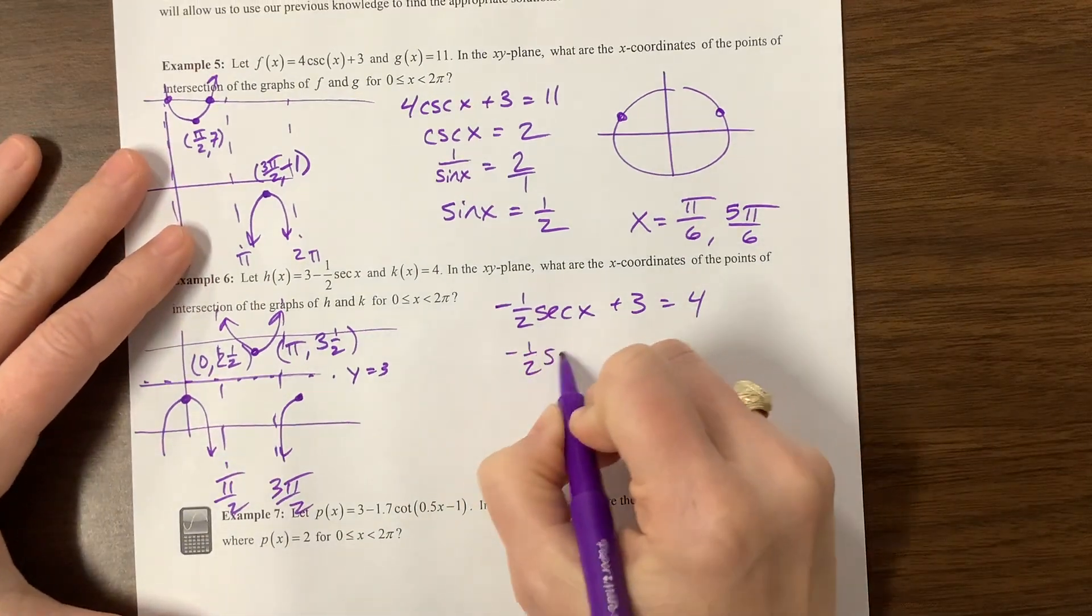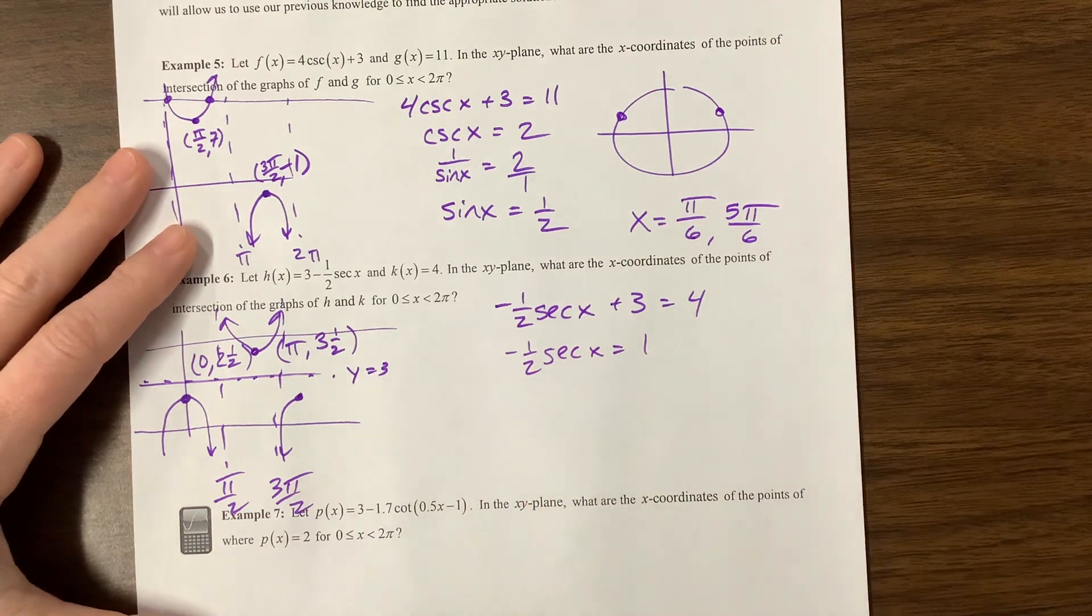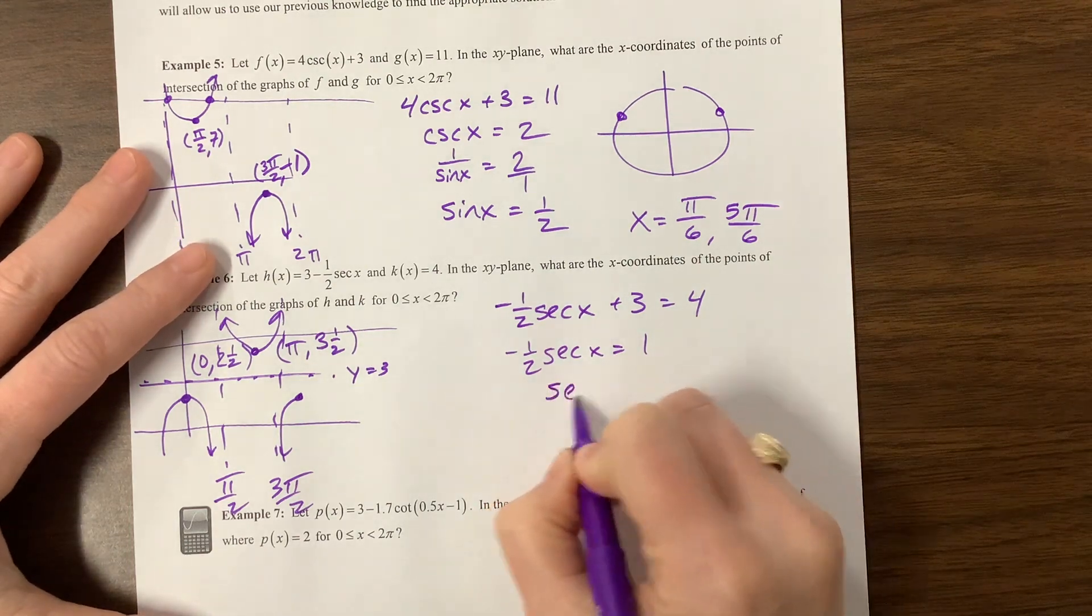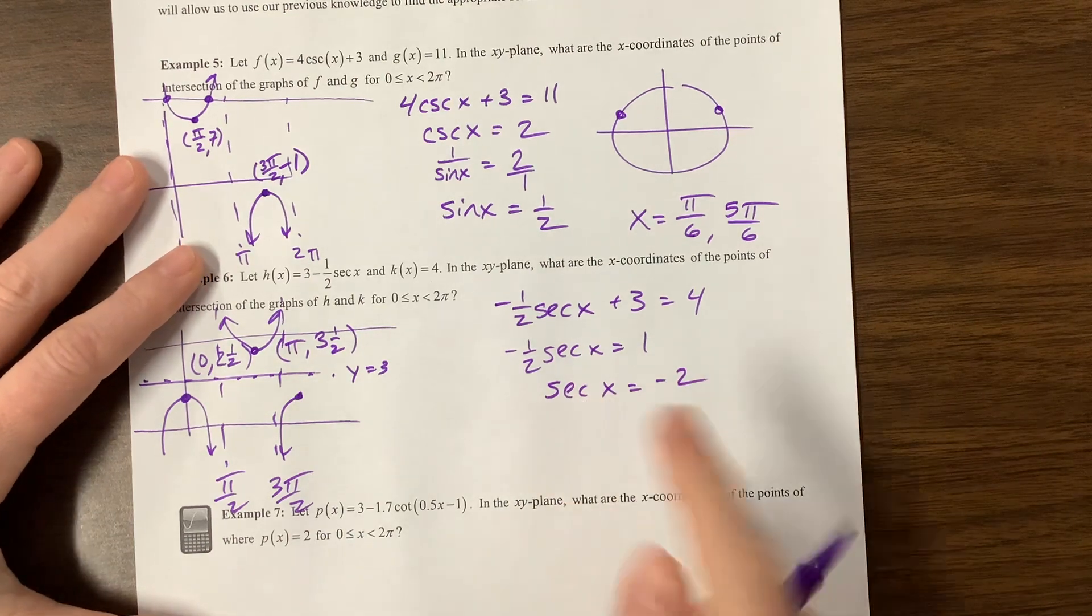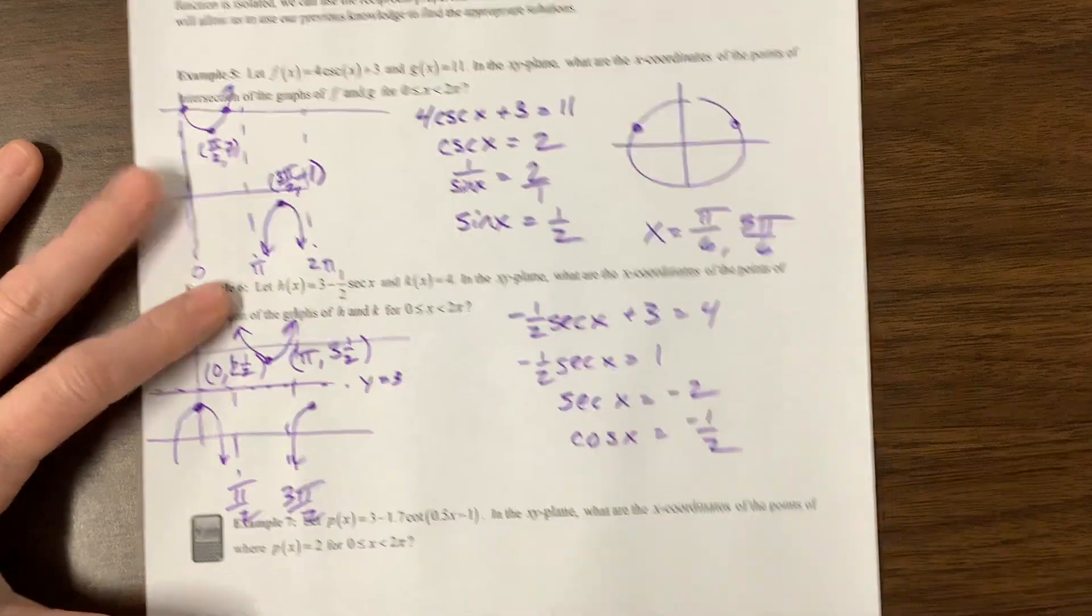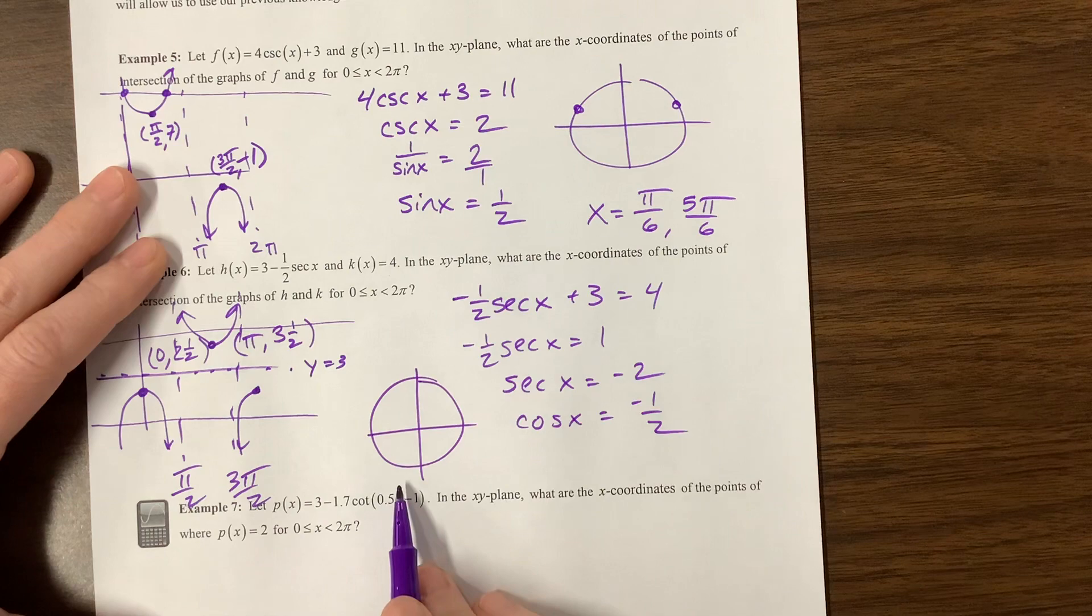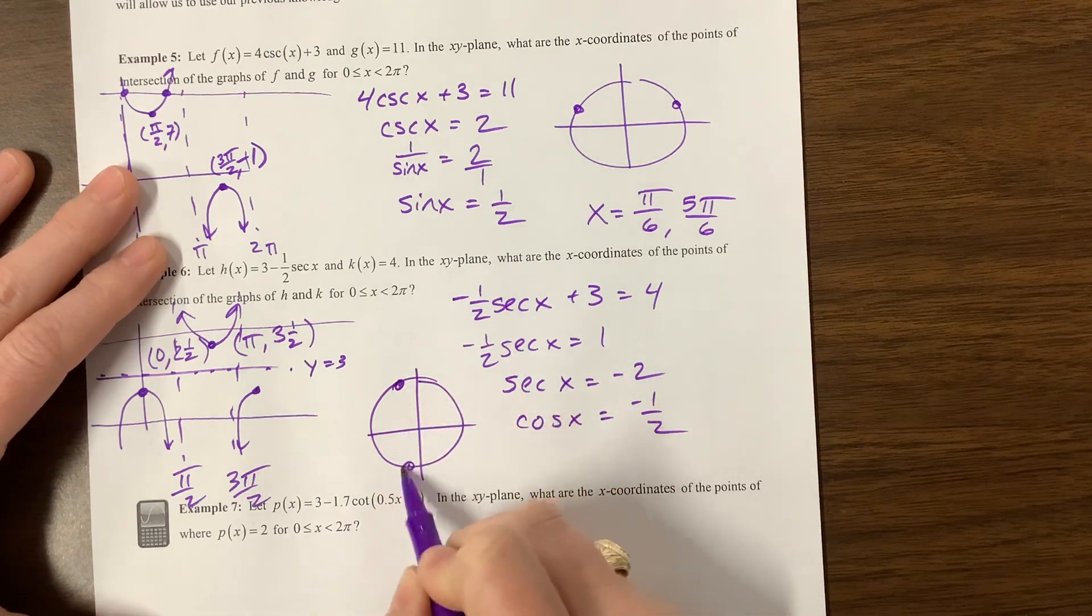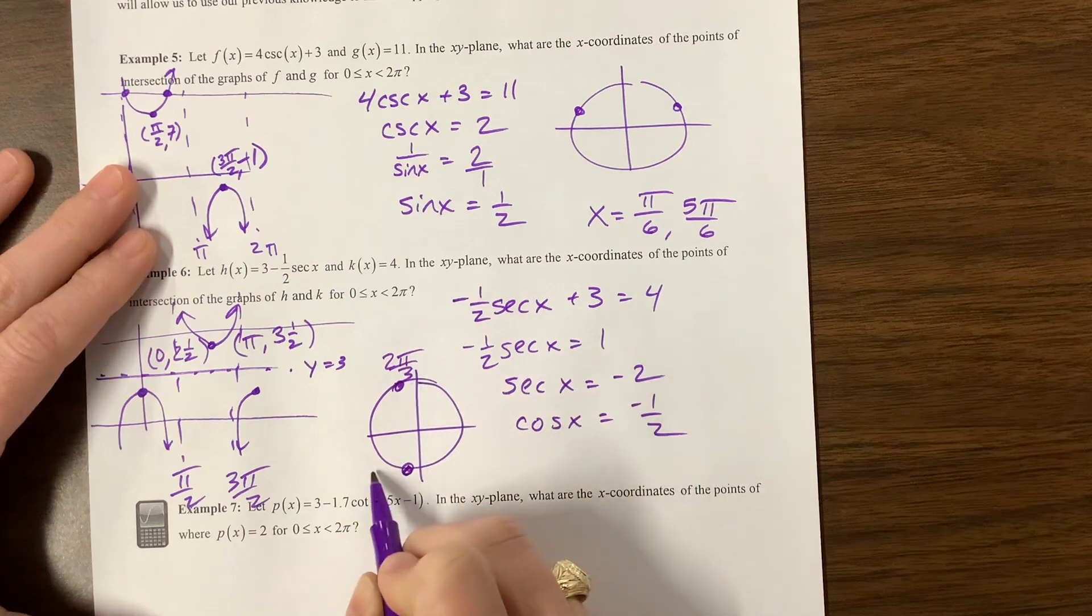Negative 1 half secant x is equal to, subtract that to positive 1, multiply both sides by negative 2, secant of x is equal to negative 2. Secant's buddy is cosine, so this becomes cosine of x is equal to negative 1 half. Cosine on my unit circle is the x value, when is it negative 1 half, here and here.